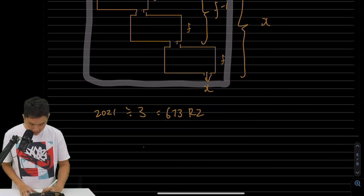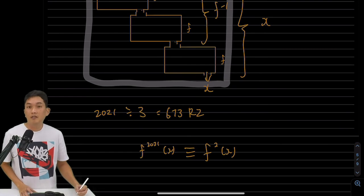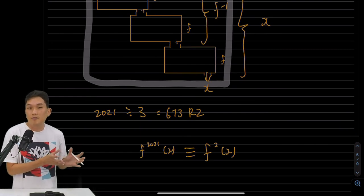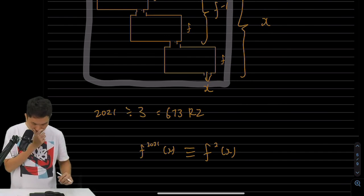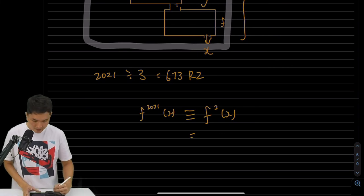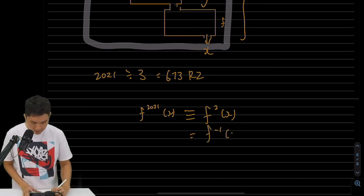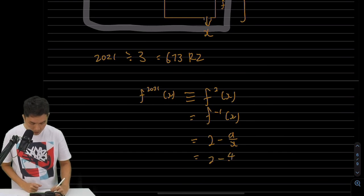Then I can say that f 2021 of x is actually the same as this. This is congruent to f square of x, because there's just 673 groups of machines doing absolutely nothing in the overview. And I know f square is just f inverse. And f inverse is 2 minus a over x. And we must use the value of a, which is 4, or else this will not work.